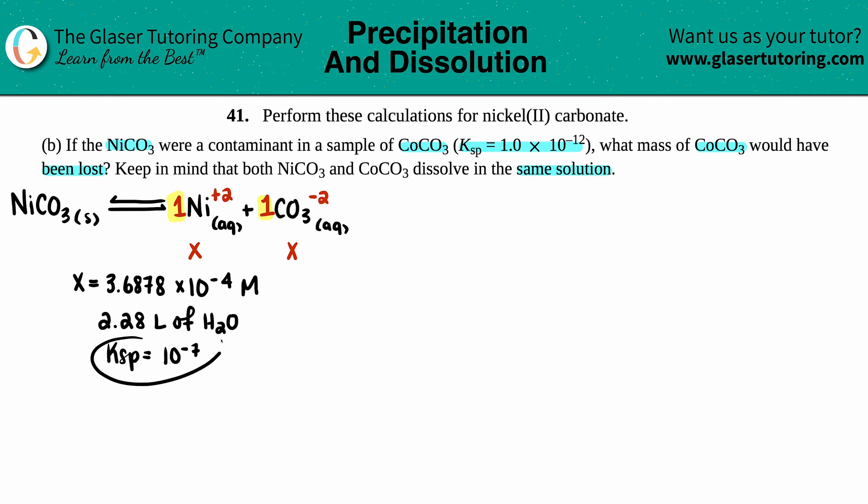The idea is that this Ksp value is larger than the Ksp value we have over here. Anytime you have larger numbers, these are going to precipitate first. That's why if the nickel carbonate was a contaminant, you're going to lose some of this cobalt carbonate because the nickel would precipitate first.